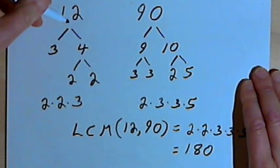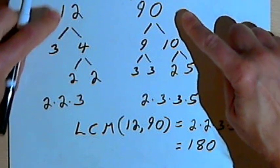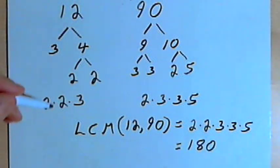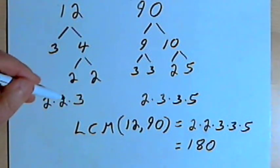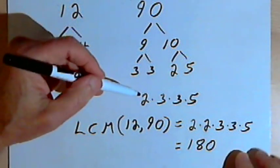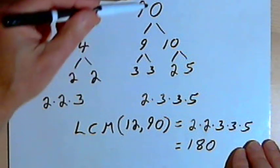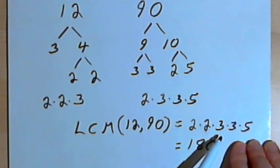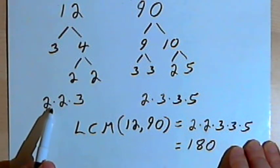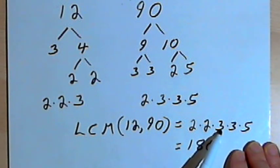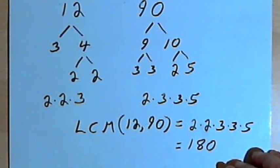Once again, all I did was I broke the numbers down into their prime factorizations. Then I built the least common multiple by taking all of the numbers in the prime factorization for one of the numbers — the 12. Then I looked at the numbers in the prime factorization for the other number, the 90, and added those to my list, anything that wasn't already in the list. I checked the list to make sure I had everything from the 12: the 2, the 2, and the 3, and the 5. And then I just multiply all of those factors together.